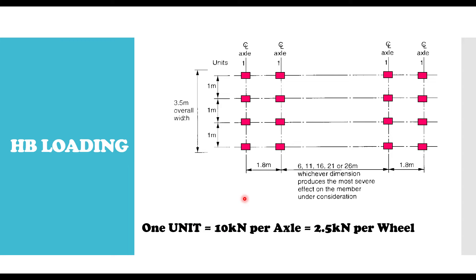From the British Standard, it is recommended that the minimum HB loading you use for your highway bridges is 30 units. So if you have 30 units of HB, that means on each axle you will be having 300 kN per axle. Then to find the load on each wheel, that is going to be 300 divided by 4, and whatever you get is the load on each of the wheels.